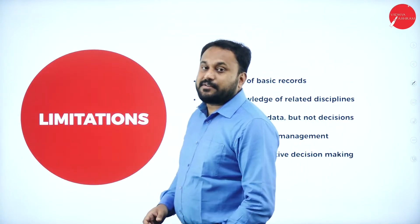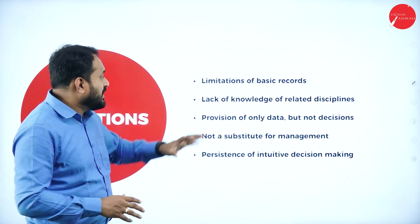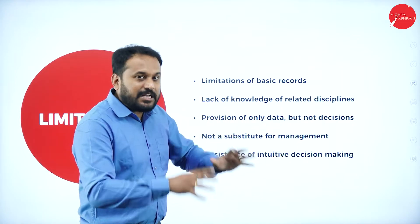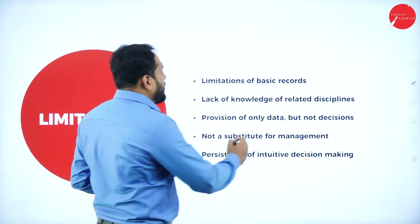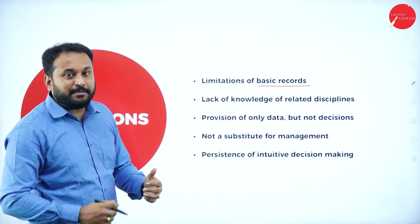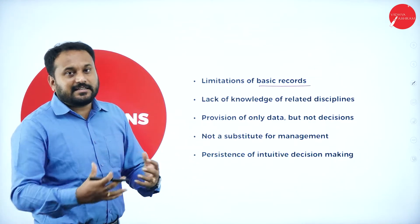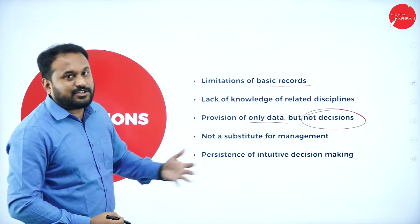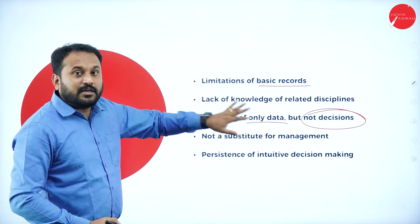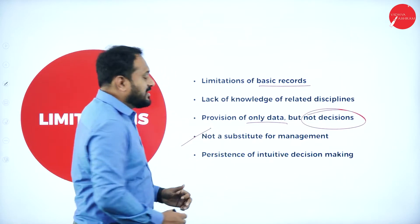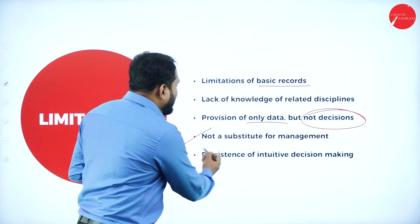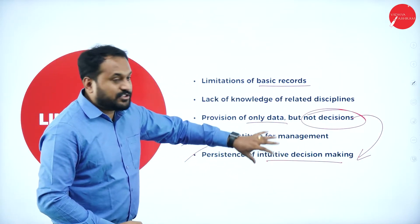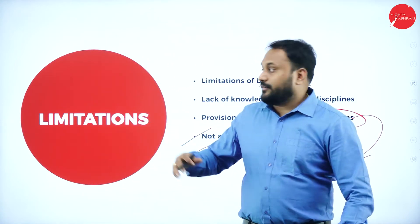Limitations of management accounting can come for 10 marks or 5 marks. For 10 marks, explain each limitation; for 5 marks, just list the points. The limitations include: limitations of basic records, lack of knowledge of related disciplines since it is a new subject, provision of only data but not decisions, not a substitute for management — which is the biggest limitation — and persistence of intuitive decision making.